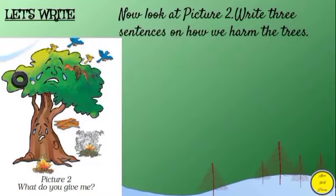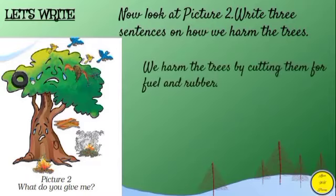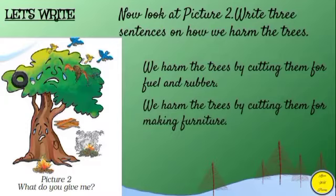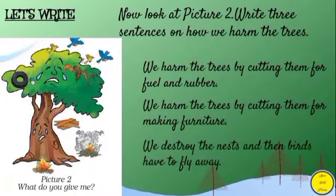The first sentence you can write: we harm the trees by cutting them for fuel and rubber. Second one: we harm the trees by cutting them for making furniture. Third one: we destroy the nests and then birds have to fly away. These are the three sentences you can write in your textbook.